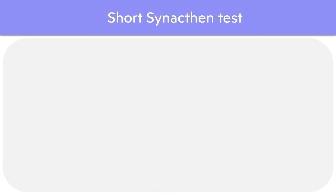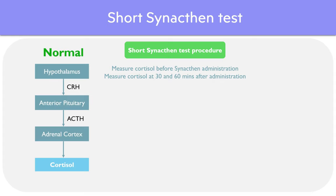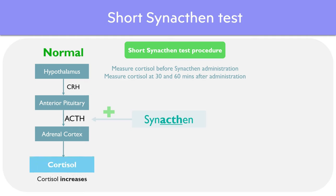Looking at the short synactin test itself, the procedure involves measuring cortisol levels before synactin administration, and then measuring cortisol at 30 and 60 minutes after the drug is given. We have our normal axis here, and we administer synactin to the patient. Note that the name synactin actually tells its function — it's simply synthetic ACTH. So when it's given to the patient, the levels of ACTH in the blood should go up, and the levels of cortisol should also go up correspondingly. This is a normal test result.